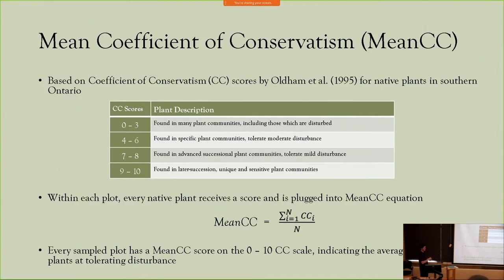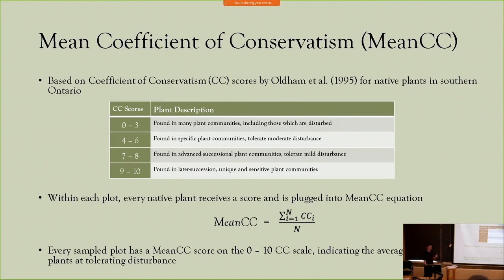The questioner asks: what would be an example of a low quality plant community scoring 0 to 3? The speaker explains that plants like poison ivy, which can occur in highly disturbed habitats, receive a score of 0 on the scale. Whereas a tree like the black oak receives an 8, given that it needs protection from human influence.